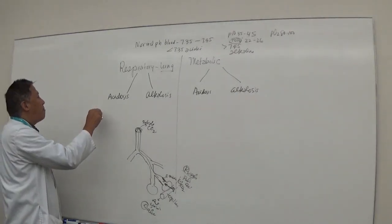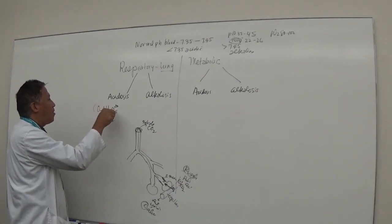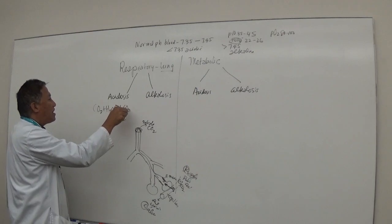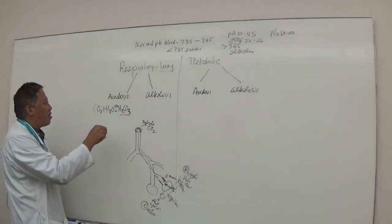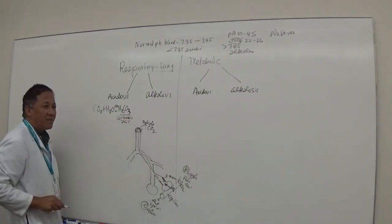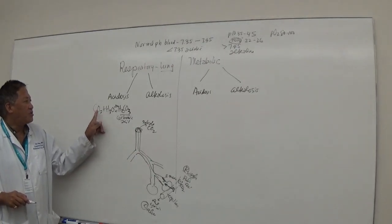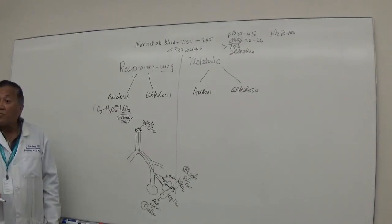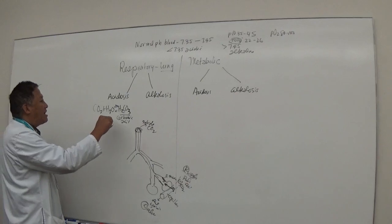So from the right side of the heart, the blood goes into the pulmonary trunk, right pulmonary and left pulmonary artery, then it goes into the capillaries. If you combine CO2 plus H2O, you form H2CO3, carbonic acid. If you combine carbon dioxide with water, it's carbonic acid.